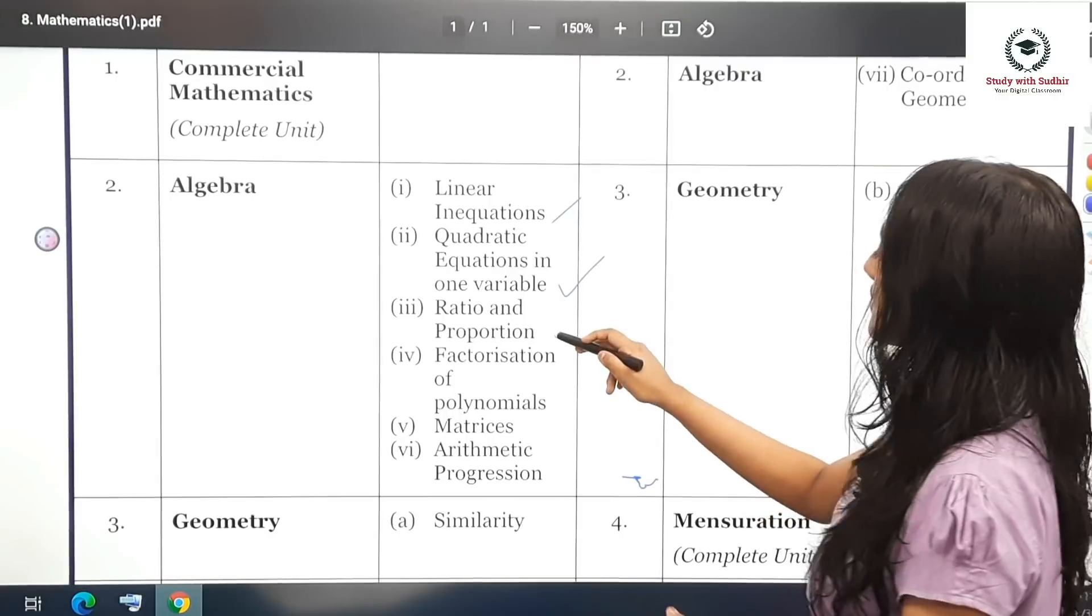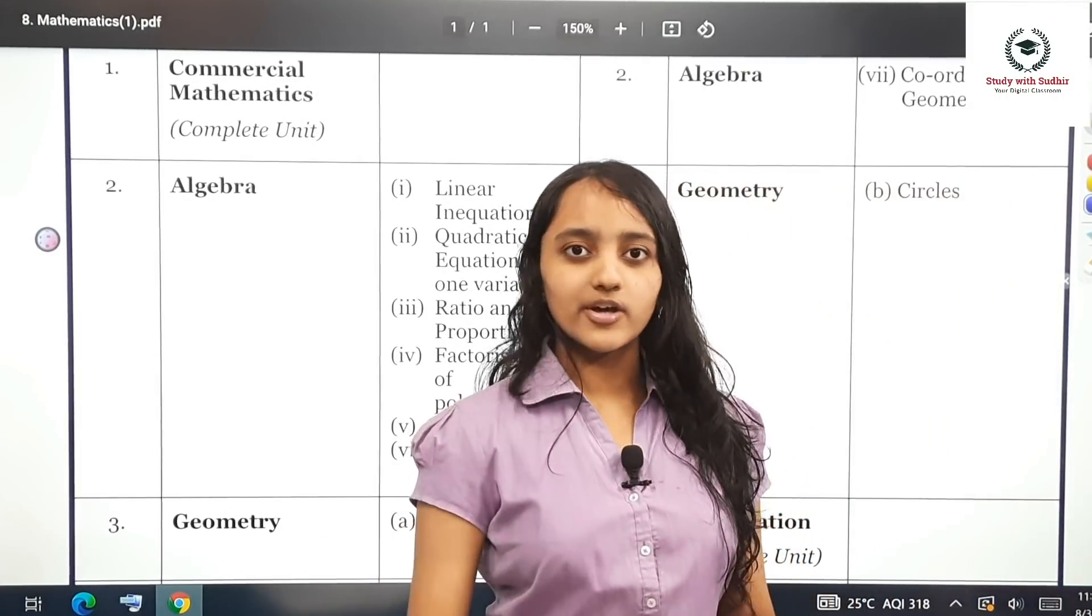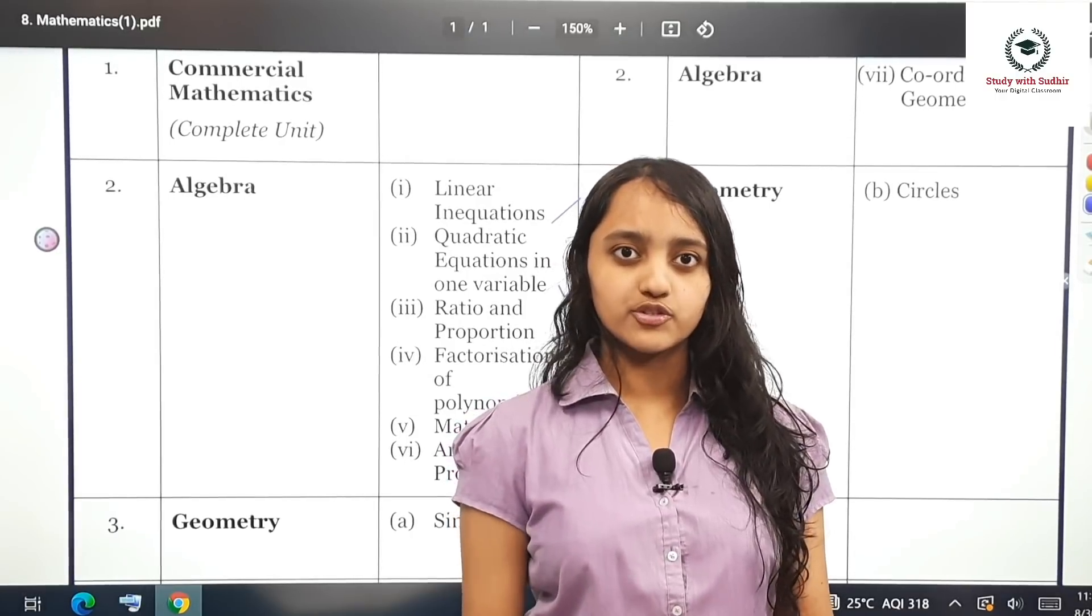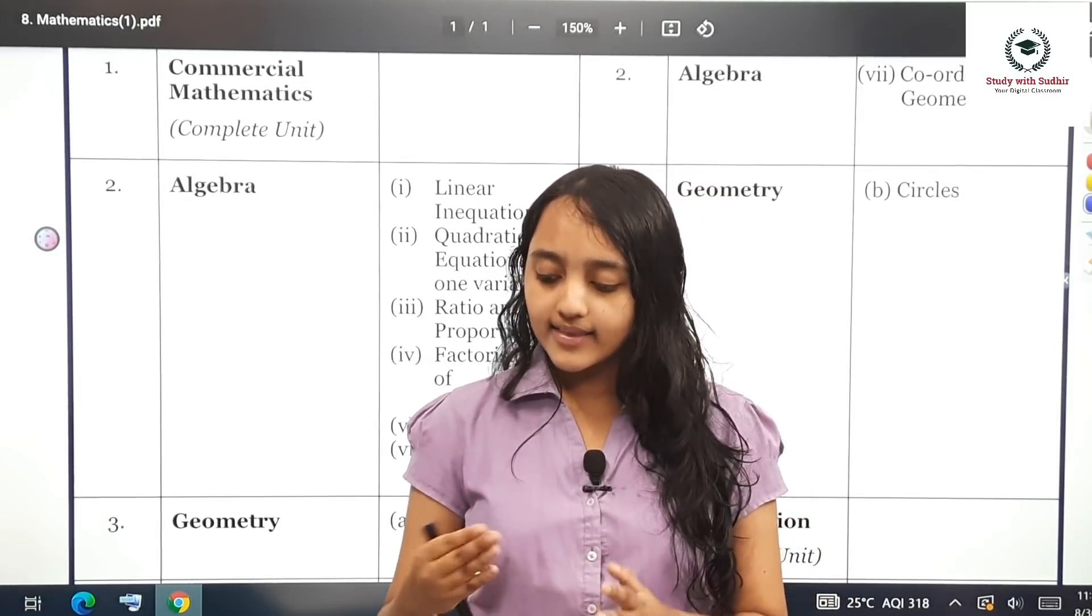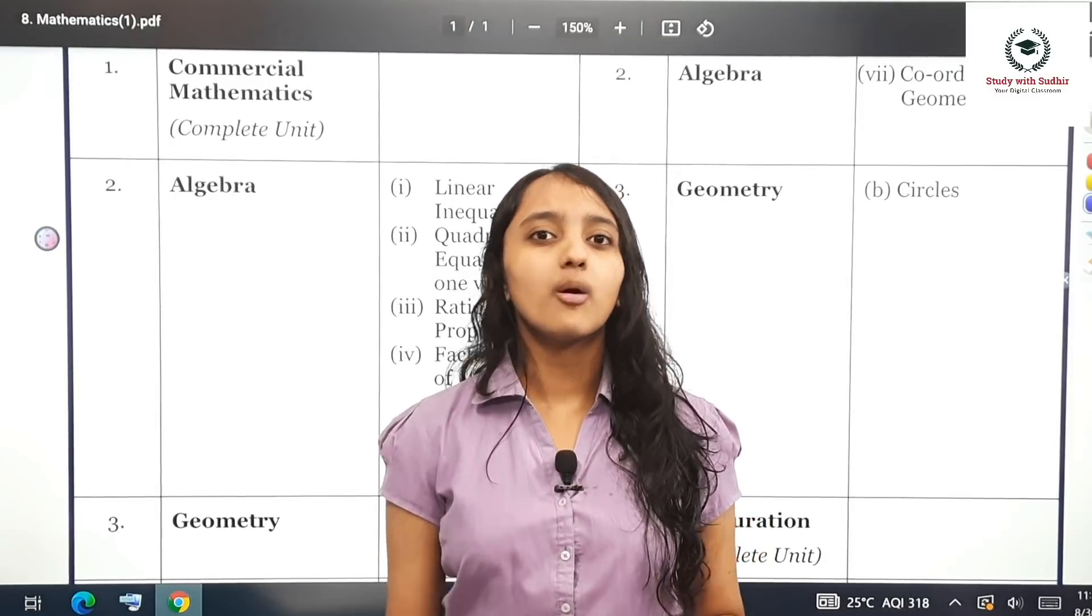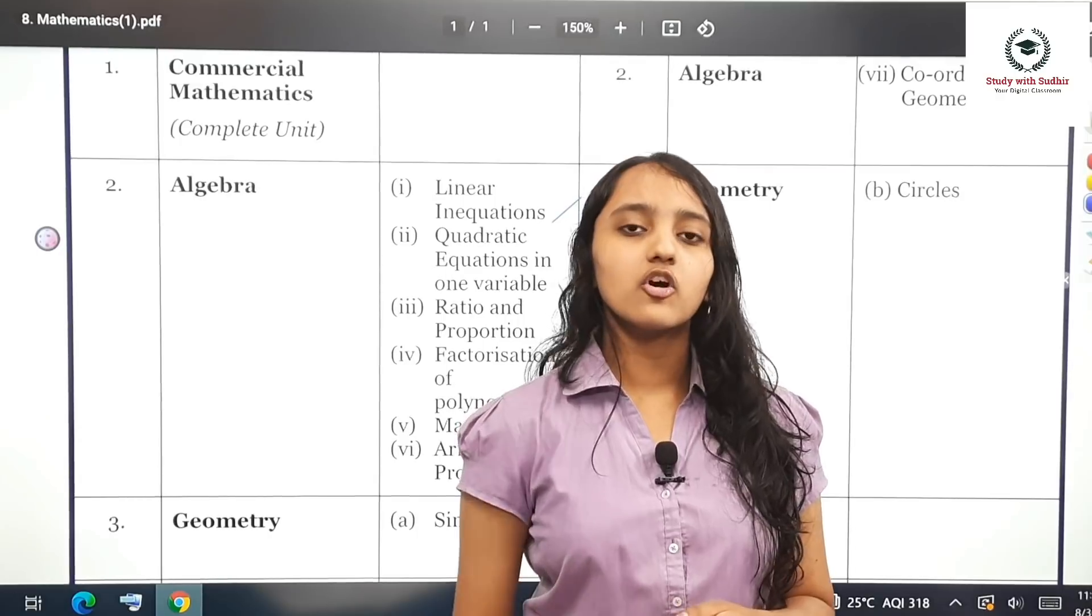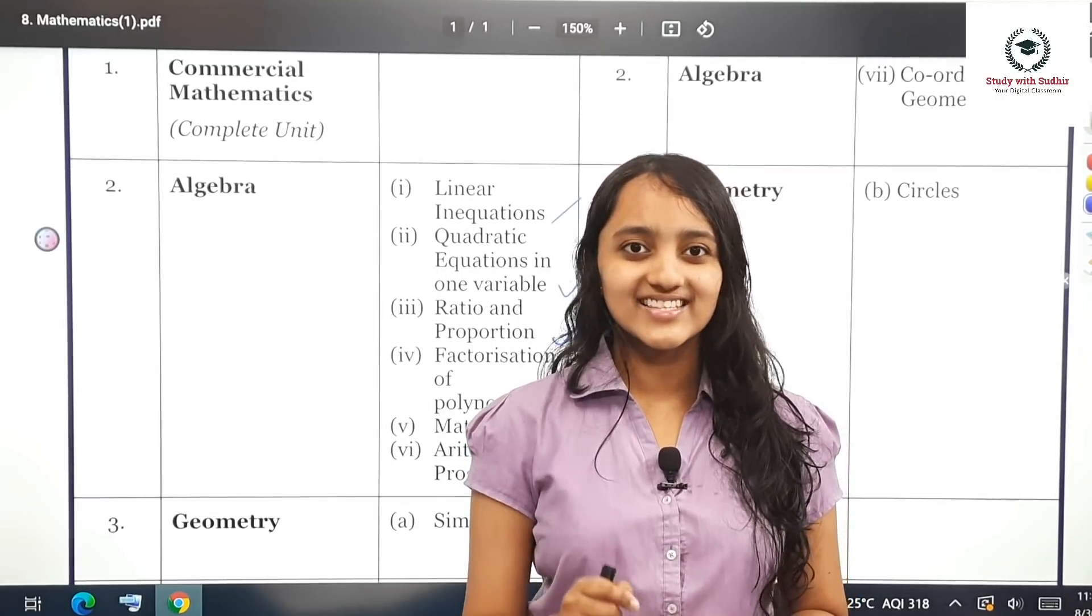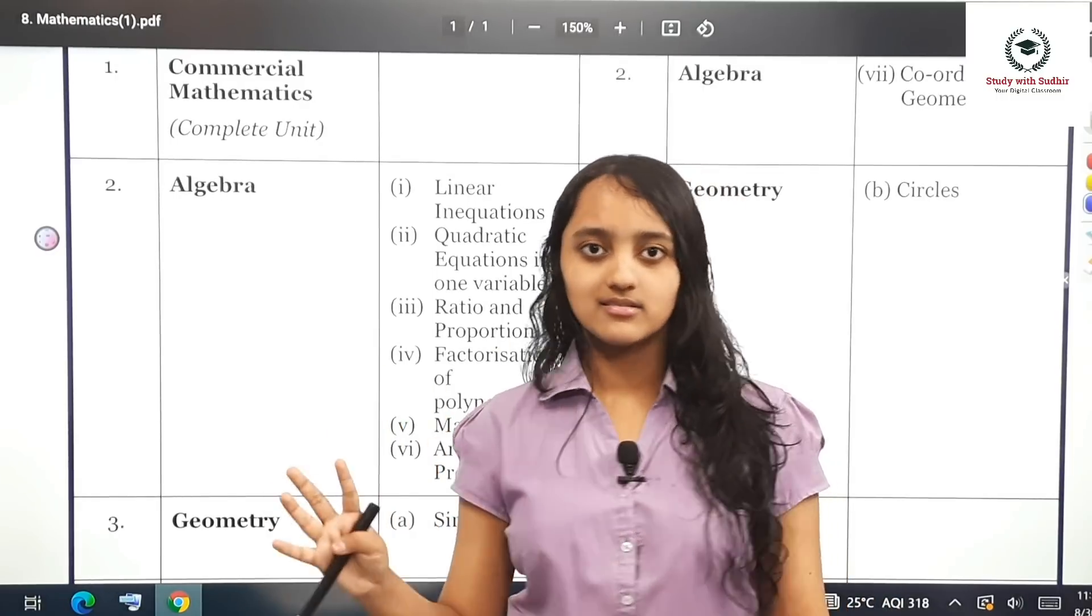The next chapter is ratio and proportion. There are some questions based directly on ratio and proportion, like b squared equals ac when three numbers are given. Then there are simple problems based on componendo and dividendo. You should be careful of the signs and you will get your answer right.